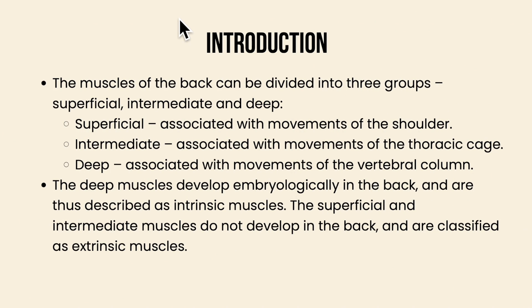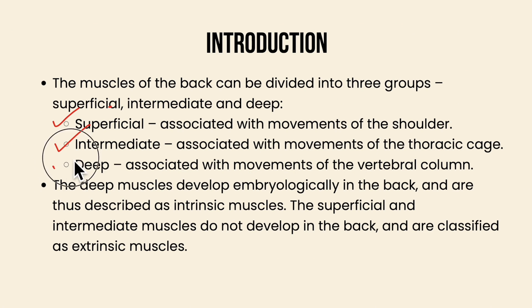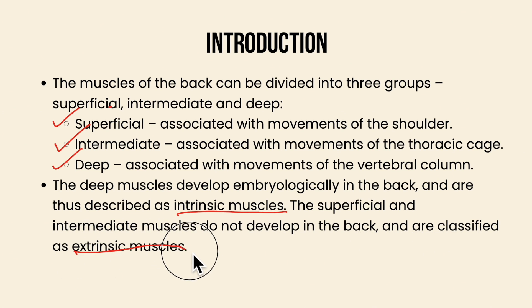To concise the important points: the muscles of the back can be divided into three groups — mainly the superficial, intermediate and deep. The superficial muscles are associated with movements of the shoulder, the intermediate with movements of the thoracic cage, and the deep with movements of the vertebral column. Now the deep muscles develop embryologically in the back and are therefore described as intrinsic muscles, whereas the superficial and intermediate muscles do not develop in the back and are classified as extrinsic muscles.